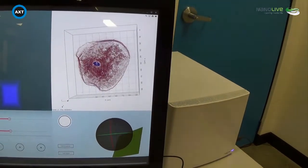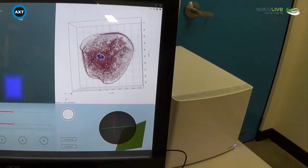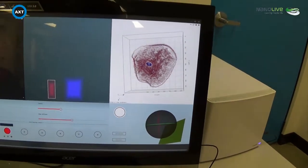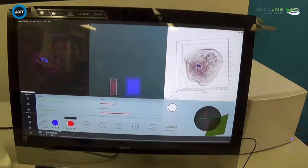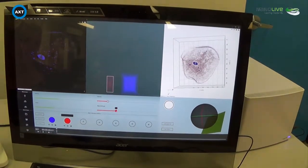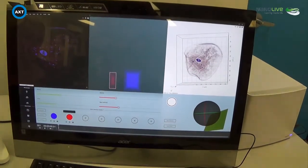And you can adjust the dyes, the stains, for clarity and for opacity. So if you wanted to turn down the red, for example, we can do that. And then we're able to see the nucleus more clearly.